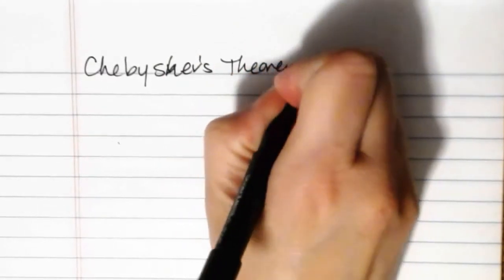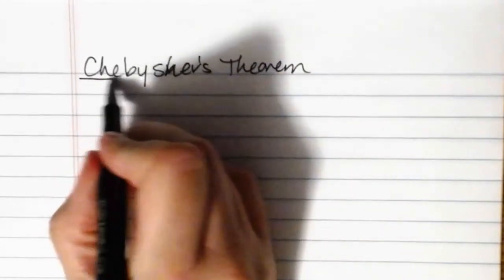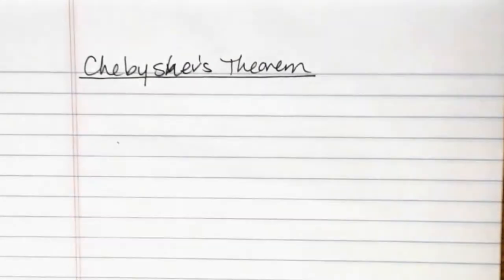In this video we're going to be taking a look at Chebyshev's theorem and we'll also look at how to create Chebyshev intervals. So Chebyshev's theorem is actually a theorem that helps us describe what percentage of our overall data will fall into different categories.